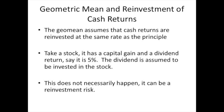The geometric mean assumes that all the cash returns from the investment are being reinvested in the stock. This isn't necessarily true, but it often is the case. For example, a stock has a capital gain and a dividend return — say that dividend return is 5%. The dividend is assumed to be invested back in the stock. With the arithmetic mean you can't really state that assumption, but with the geometric mean you are implicitly assuming that dividends or any other cash returns are reinvested in that investment itself.